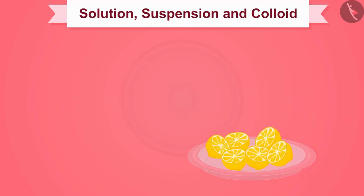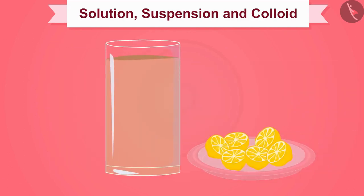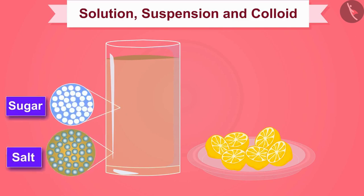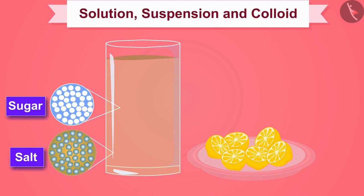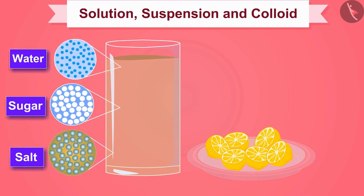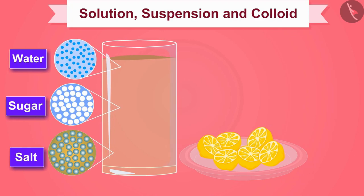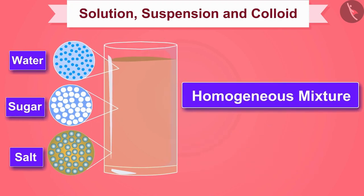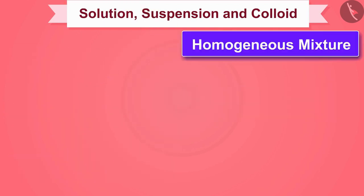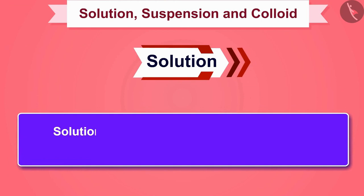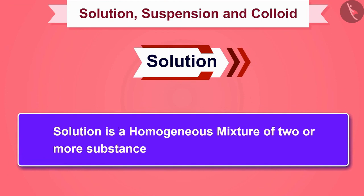Do you like to drink lemon water? Lemon water is an example of a solution that consists of sugar and salt particles and water particles. And because it has the same texture, it is a homogeneous mixture. From this example, we can say that a solution is a homogeneous mixture of two or more substances.